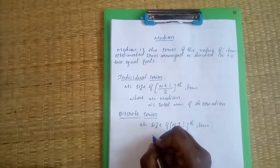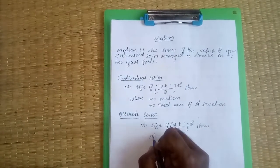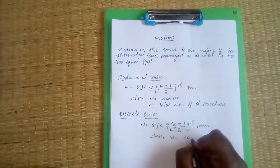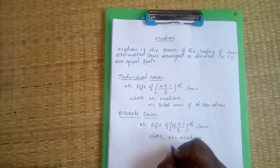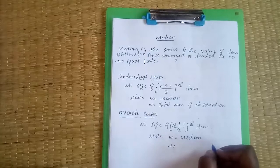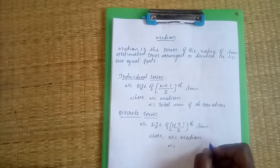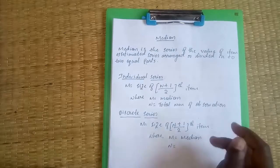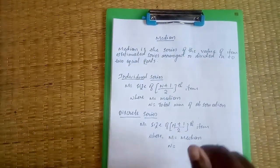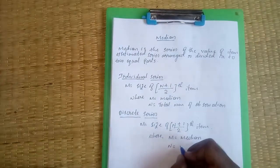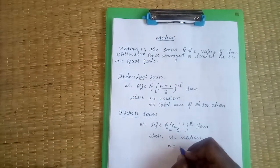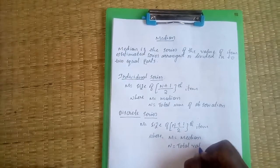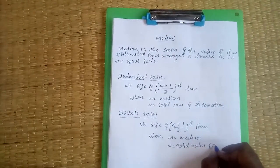Where M equals median, and here n equals total value of the observations. So n equals total value.